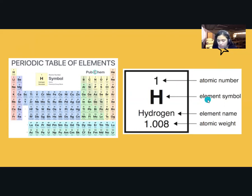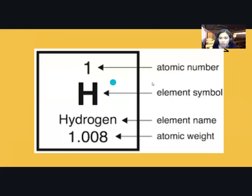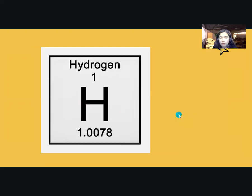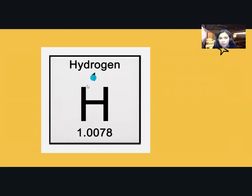Generally, the symbol is the first one or two letters of the element's name, although several element symbols come from their name in Latin, and some elements have names that relate to famous scientists or where it was discovered. If we look at each box on the periodic table of elements, we can see the atomic number, the element symbol, the element name, and the atomic weight. But it varies on the format of the periodic table, so sometimes the atomic number is located here or at the corner.